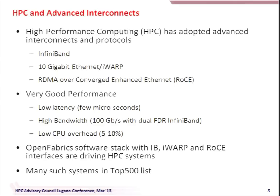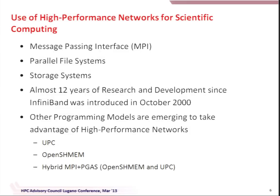The third important aspect of modern interconnects is low CPU overhead. We can get all this performance with low CPU utilization so that the maximum amount of CPU cycles are left for computation. Many of you must be familiar with the OpenFabrics software stack, which now has IB, iWARP, and RoCE interfaces — all integrated — driving HPC systems and many systems in the Top 500 list. MPI designs, parallel file systems, and storage systems have all adopted these high-performance networks.